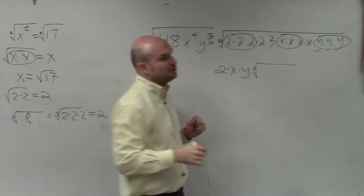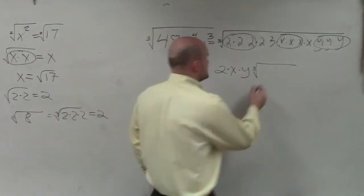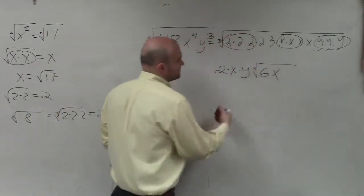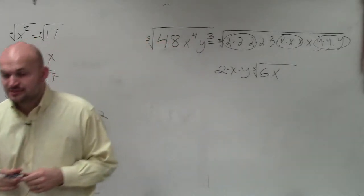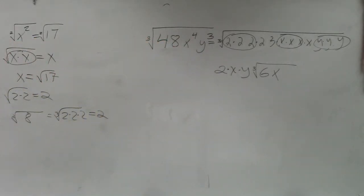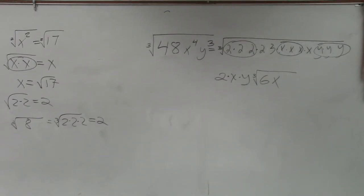Leftover under your cube root is going to be two times three times x, which is 6x. And then actually that's going to be your final answer. 2 times 3 and then times x.